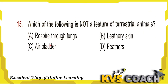Next question: which of the following is not a feature of terrestrial animals? Terrestrial animals are animals that live on land. Option A — they respire through lungs — correct feature. Option B — they have leathery skin — correct. Option C — they have air bladders — no, this is wrong; air bladders are present in aquatic animals. Option D — feathers — birds have feathers and live on land. So the right answer for question 15 is option C — air bladder.